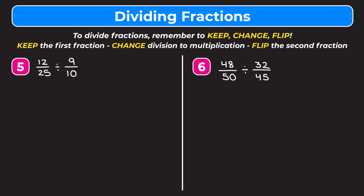Number five is twelve over twenty-five divided by nine tenths. Keep twelve twenty-fifths, change division to multiplication, flip the second fraction to become ten ninths. Cross-reducing: twelve and nine both divide by three — twelve becomes four, nine becomes three. Ten and twenty-five both divide by five — twenty-five becomes five, ten becomes two. Multiplying straight across: four times two is eight on top, five times three is fifteen on the bottom. Because we fully cross-reduced, no further simplification needed — the answer is eight fifteenths.